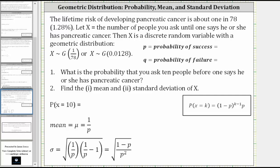In this example, we will find a probability, the mean and standard deviation of a geometric distribution.